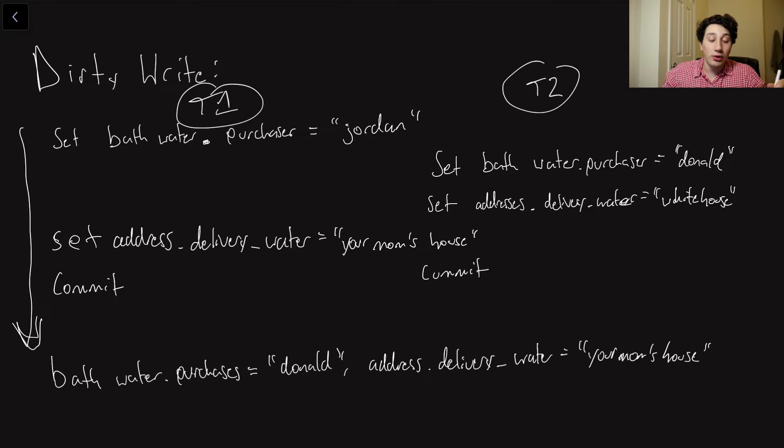So imagine we have basically two different rows on our database, maybe two tables in the database and one row from each. One is going to be our bathwater table. And then the other is going to be our delivery addresses table, for example. Great, great example, right?